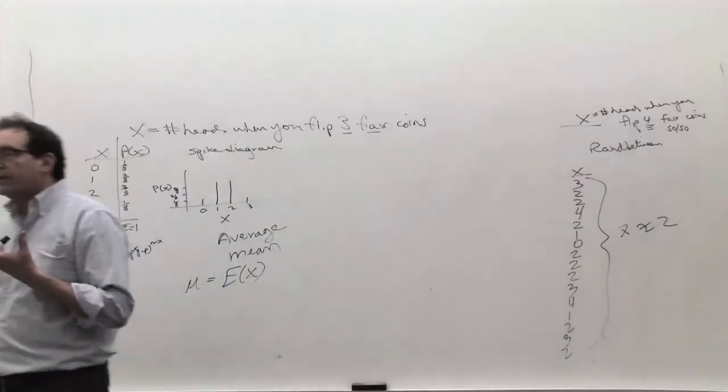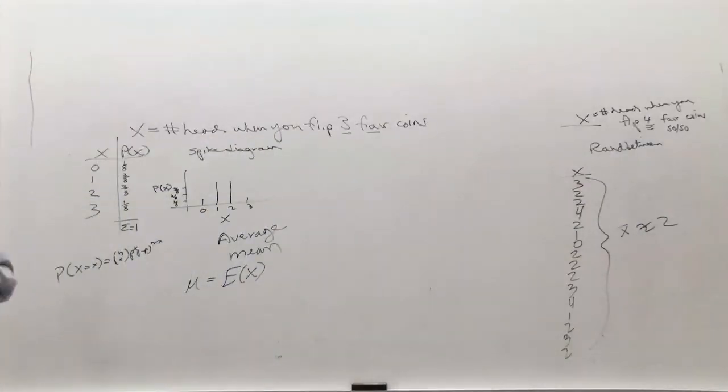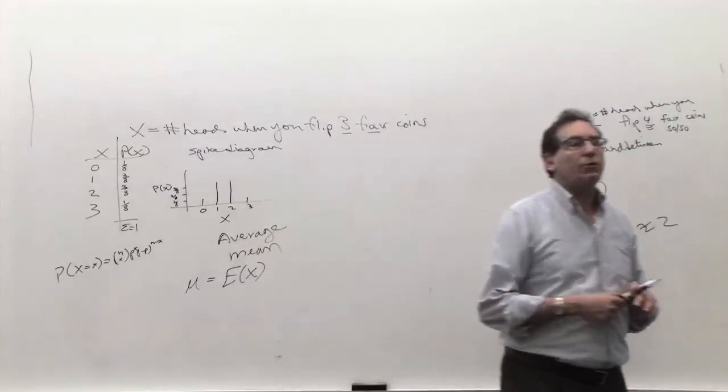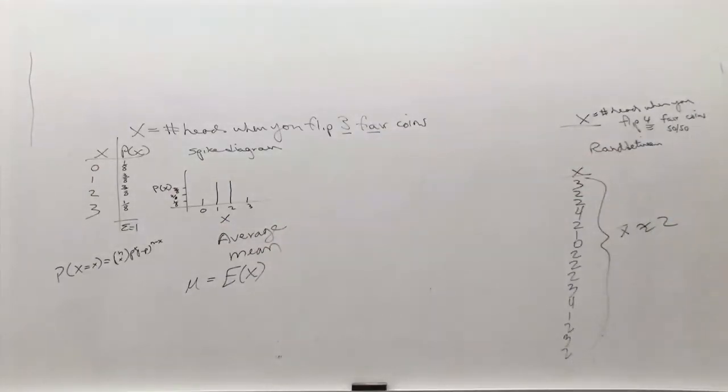So if you understand that, not just memorizing it, but actually understanding it, the next step is, what about our example where there's only three coins? How many heads do you expect to get on the average? Tiffany, you want to say again? One and a half? The answer is one and a half.